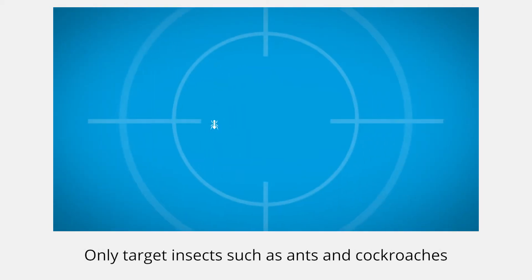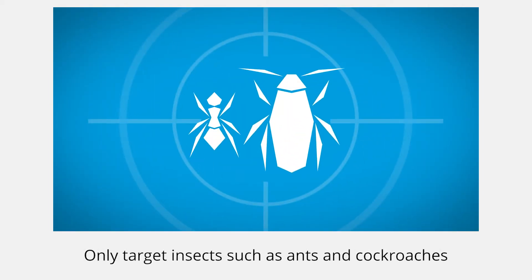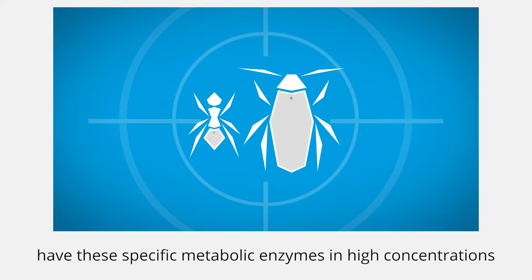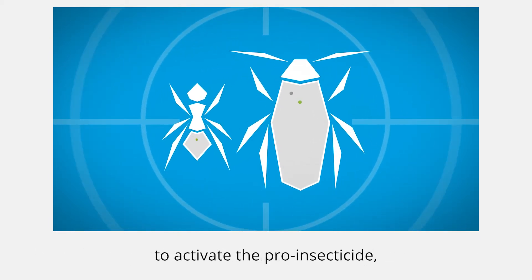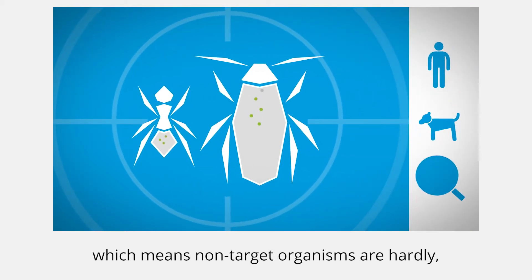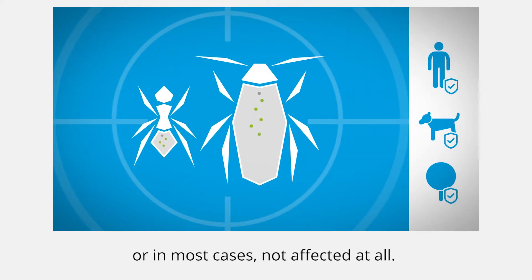Only target insects such as ants and cockroaches have these specific metabolic enzymes in high concentrations to activate the pro-insecticide, which means non-target organisms are hardly, or in most cases, not affected at all.